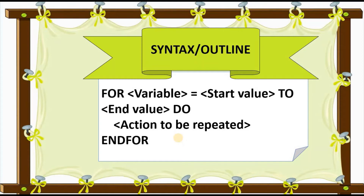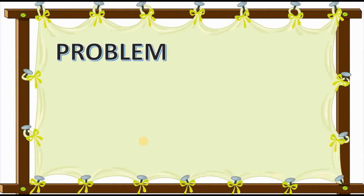In the action block we display a message, read the information into a memory location, and can also print output showing what the user entered — for example, 'your name is' followed by the name. Once there are no remaining actions, we end the for loop using 'end for', similar to how we ended other control structures.